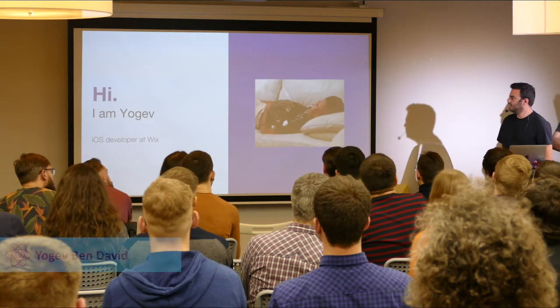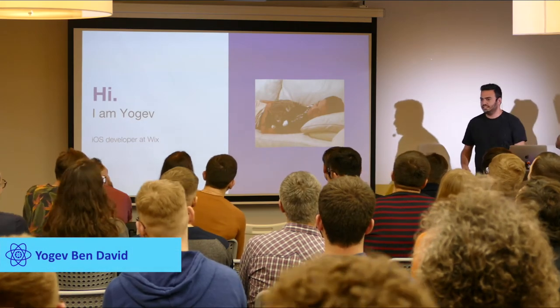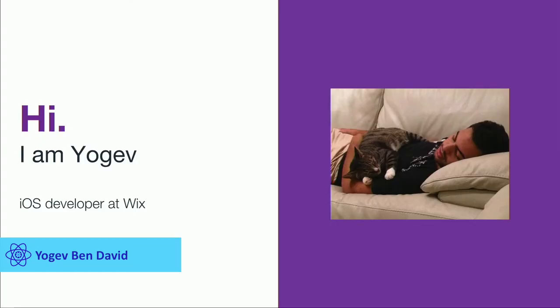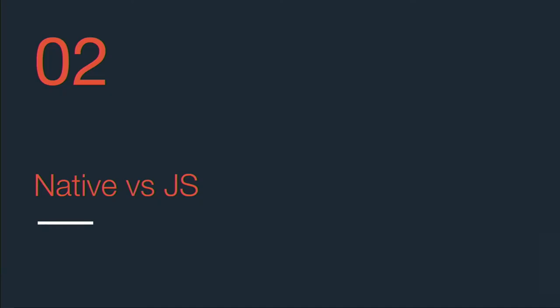Hello everyone, my name is Gev. I'm an iOS developer at Wix and I've been working for the past two years on React Native Navigation. There are many JavaScript solutions out there, so why and when should you consider using a native solution? What features are lacking in those JavaScript solutions that we do have in the native solution? Let's try to answer those questions.